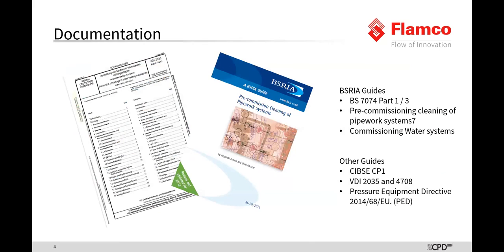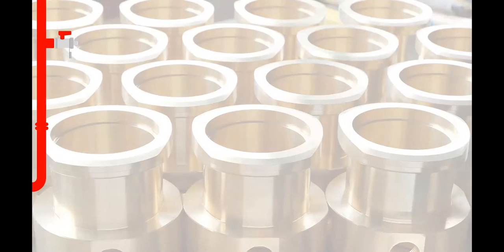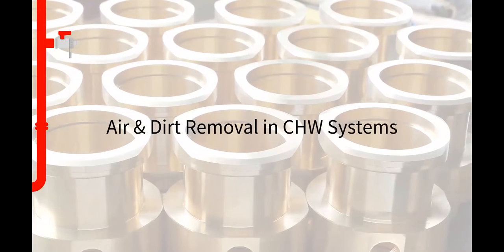The basis for today's presentation includes the BSRIA Guide BS 7074 Part 1 and 3, Pre-Commissioning Cleaning of Pipework Systems Part 7, and Commissioning of Chilled Water Systems BSRIA Guide. We will also reference the CIBSE CP1 Guide, VDI 2035 and 4708 standards for air removal in chilled water or heating systems, as well as the Pressure Equipment Directive of the European Union — 2014/68/EU.